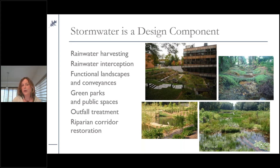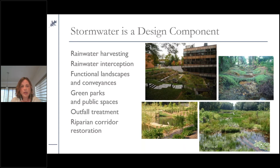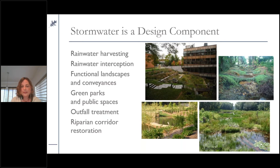Another really critical thing with stormwater is the point of scale. Larger-scale practices have developed a bad reputation, which is unfortunate. We need to think about a variety of scales and opportunities to integrate stormwater management into our overall landscapes — everything from harvesting rainwater to multifunctional landscapes that treat, filter, and convey while also acting as community amenities, larger-scale green parks and public spaces, outfall treatment, and riparian corridor treatment.